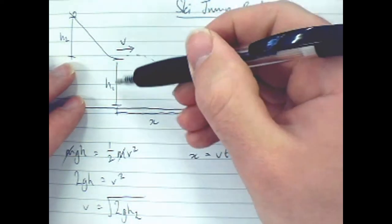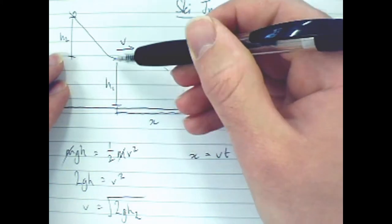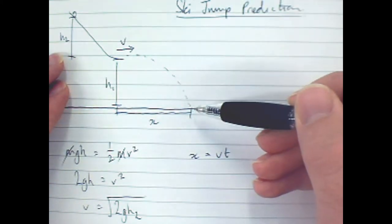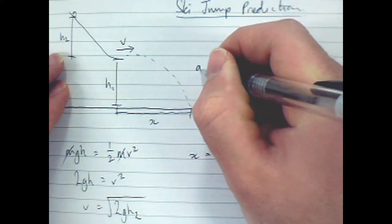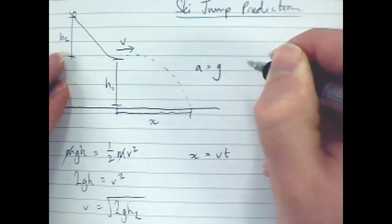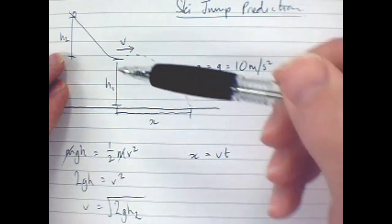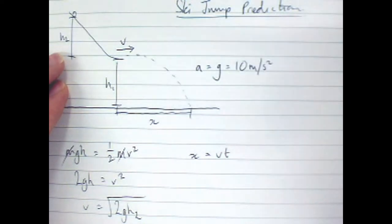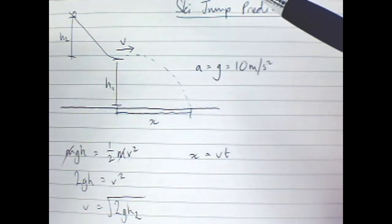Well, earlier on in the course we talked about, if we know the height, we know the time that that projectile is going to be in the air. Because we know something else. We know the acceleration is G, which is 10 metres per second squared. So we know that at all times. So if we know height, we can work out the time that that projectile is going to be in the air for.